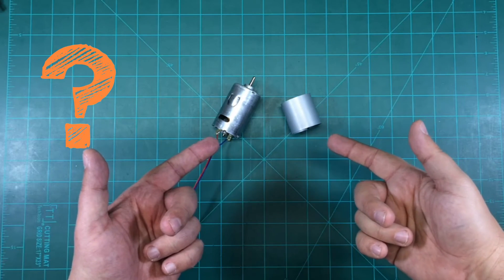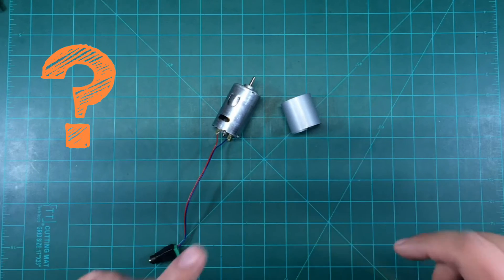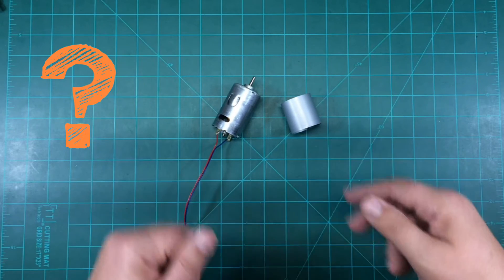Have you ever wondered why they put this metal collar on the outside of a DC motor? Well, if you have, stick with me because I'm going to explain why. Let's jump into it together.